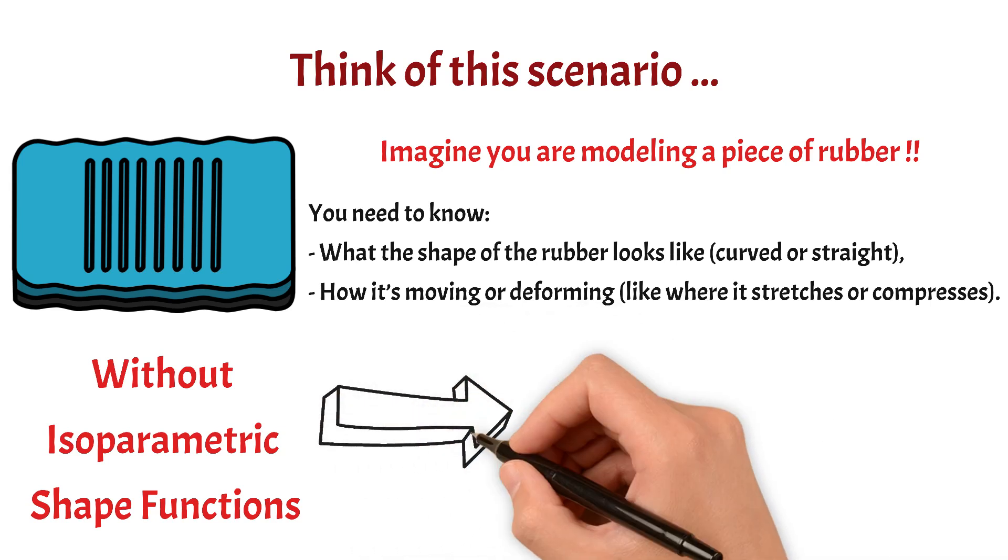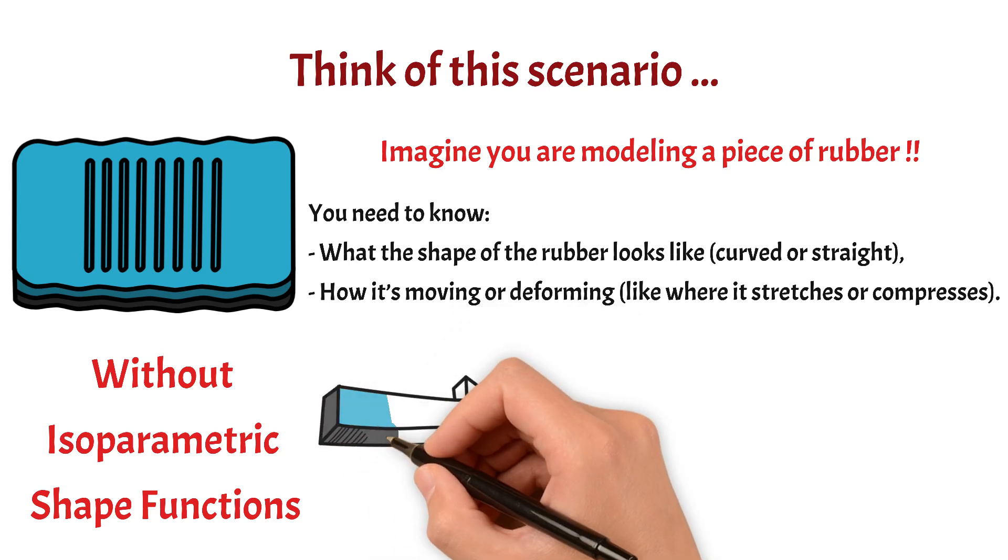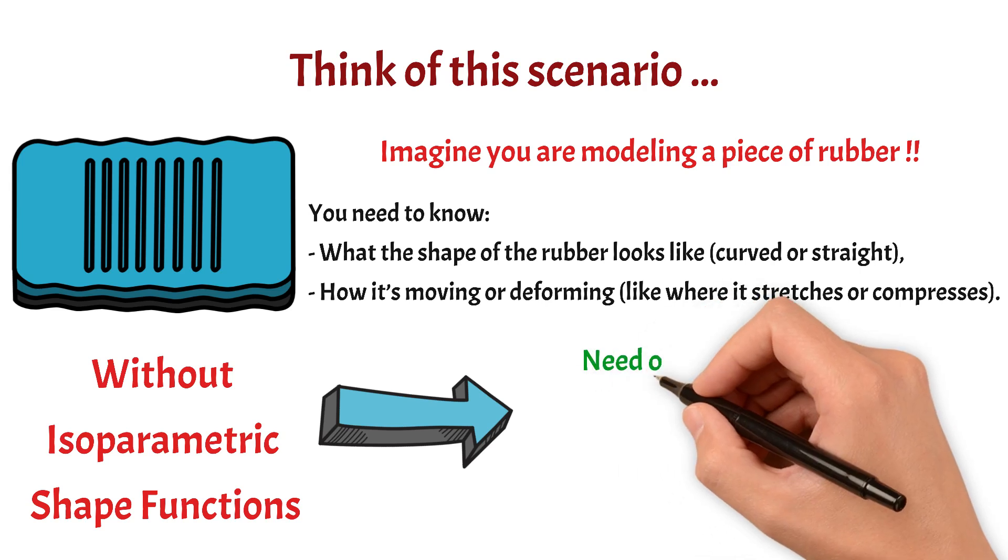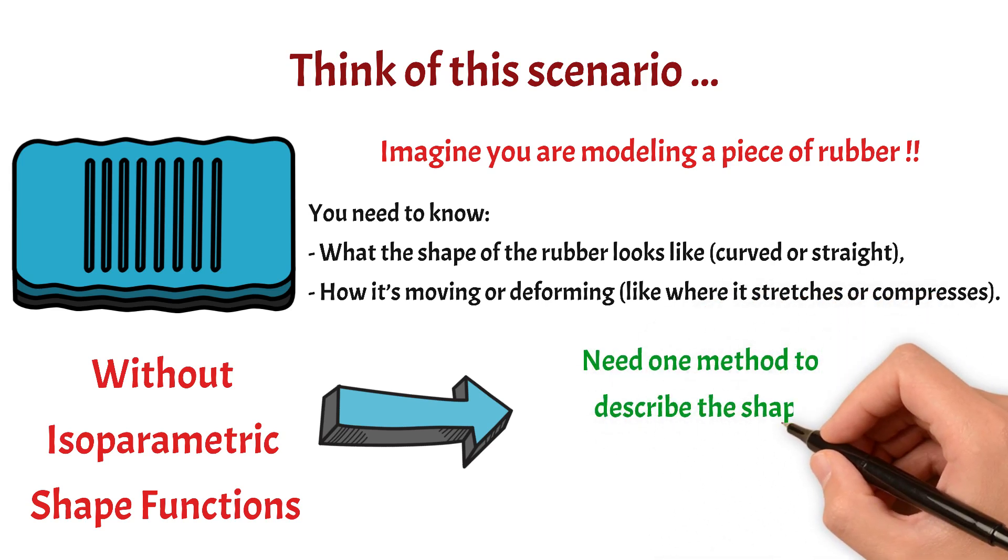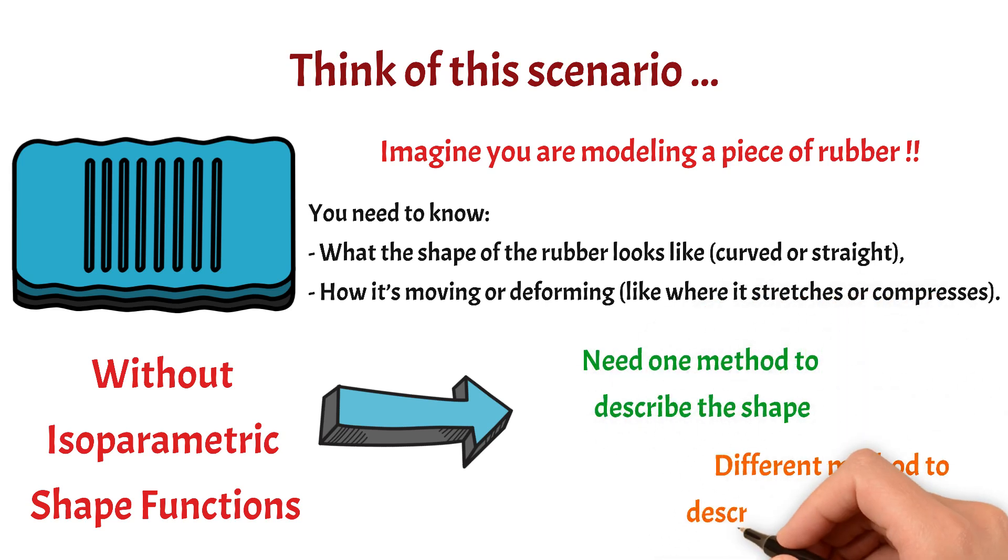Now, without these shape functions that I just described, you'd need two different methods, one to describe the shape and another one to describe how it deforms. This is just extra work. It's messy and makes coding and solving more complex. Basically, you are juggling two systems when one unified approach would be way easier and cooler. And that's why isoparametric shape functions are a game changer.